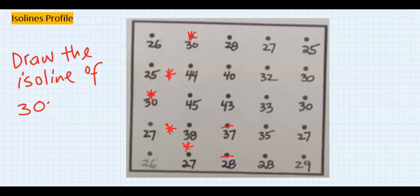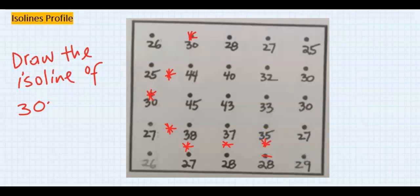This is 37, so going from 28 to 37 I'm going to encounter 30 here. Next, this is 28 and this is 35 — in between 28 and 35 I've got 30. This is 28-29, this is 27-29, this is 27-35, hence there is 30 in between.